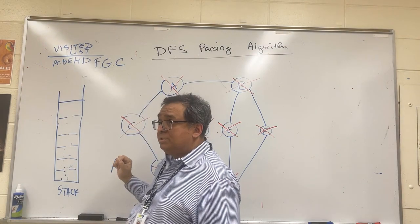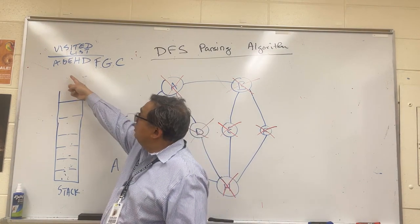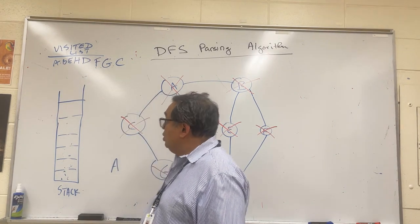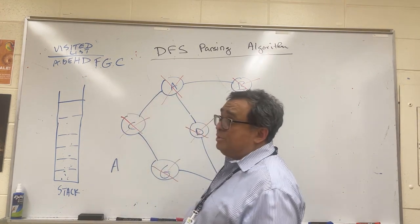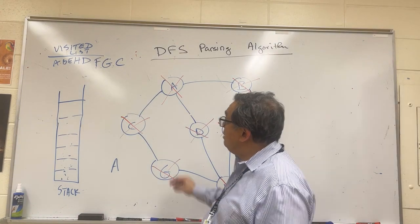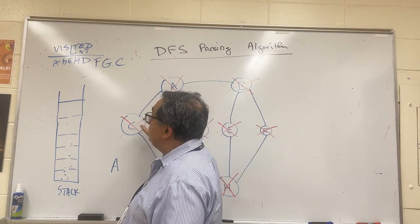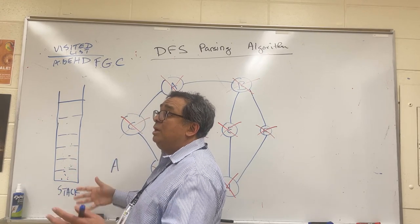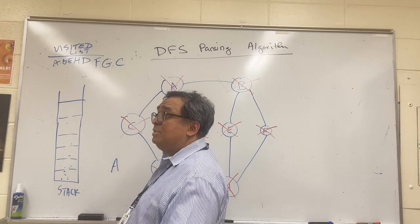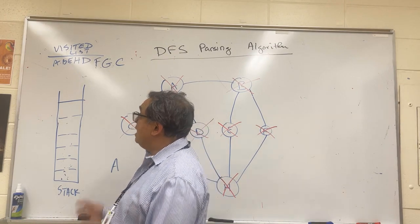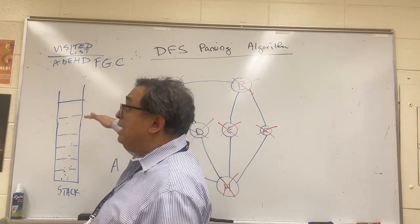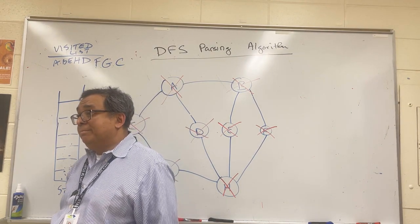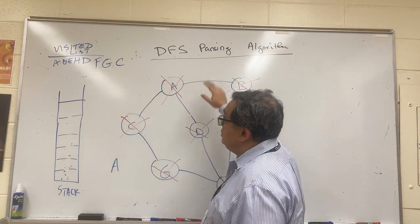The visited list shows all nodes — this is also the output: A, B, E, H, D, F, G, C. That is a depth-first search. There could be multiple valid depth-first search orderings, but I added the alphabetical rule so that when you run this algorithm you get a deterministic answer that will match the auto-grader.